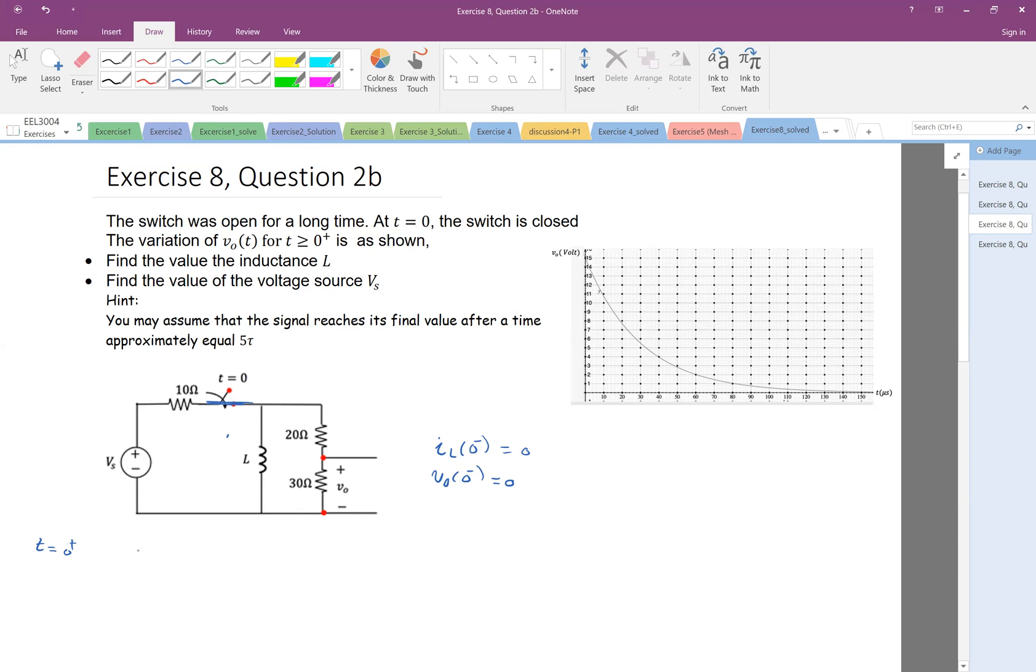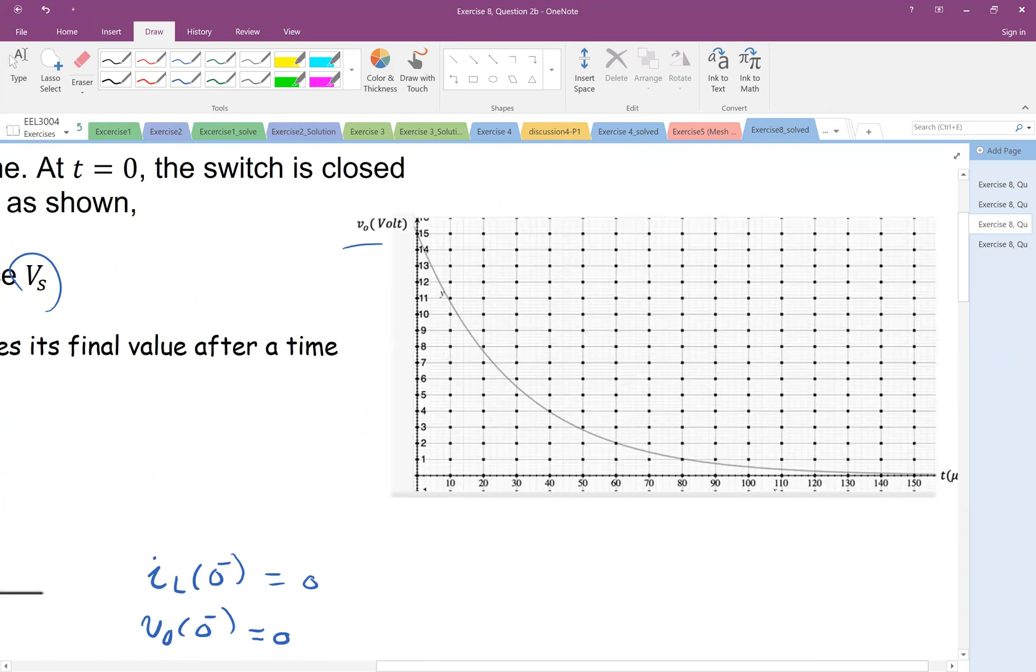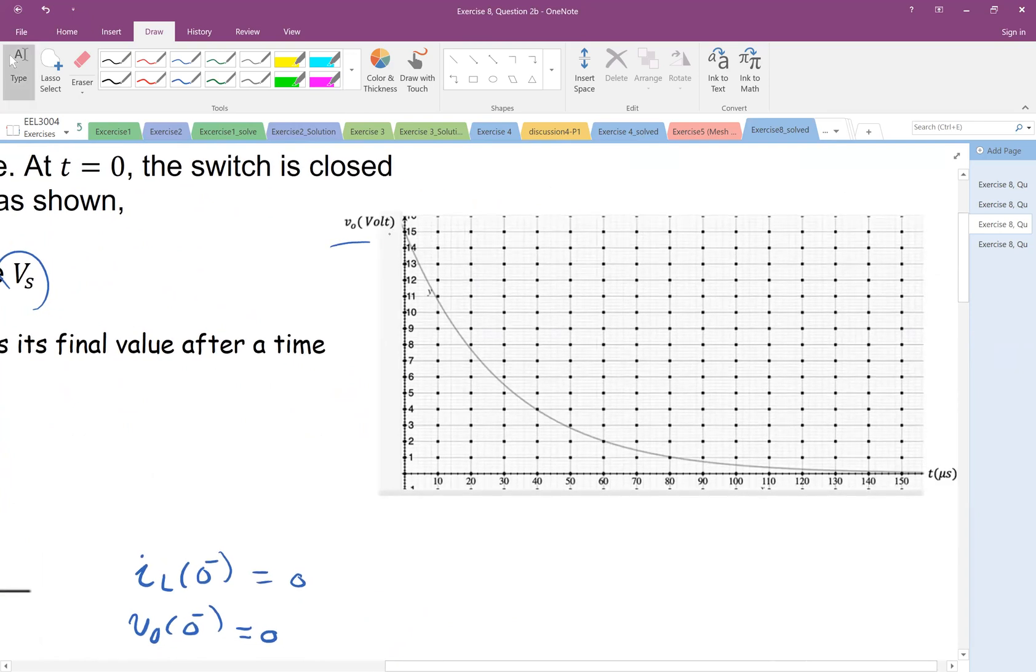We close the switch and we would like to know, because eventually I would like to know, somehow let's see what it was. The variation of V0(t) is given here. And then we would like to find L and Vs. So somehow we are looking at V0 of t. This V0 of t is given by the graph, so there is some information that we can extract from this graph.